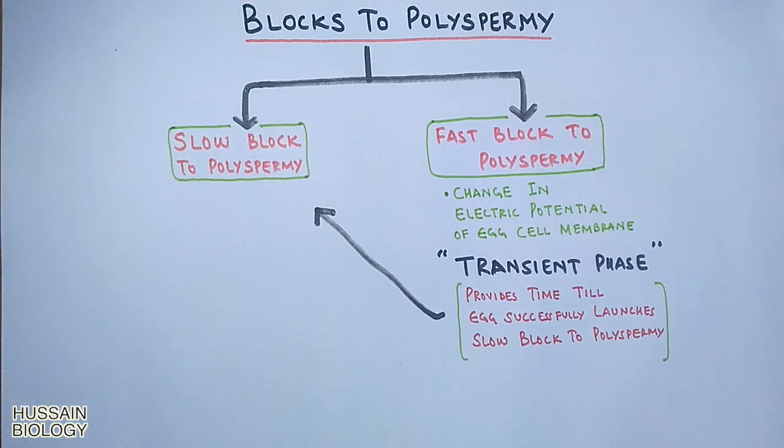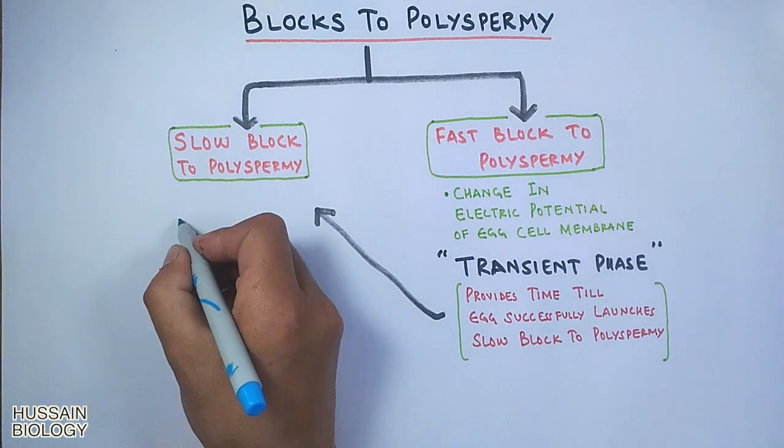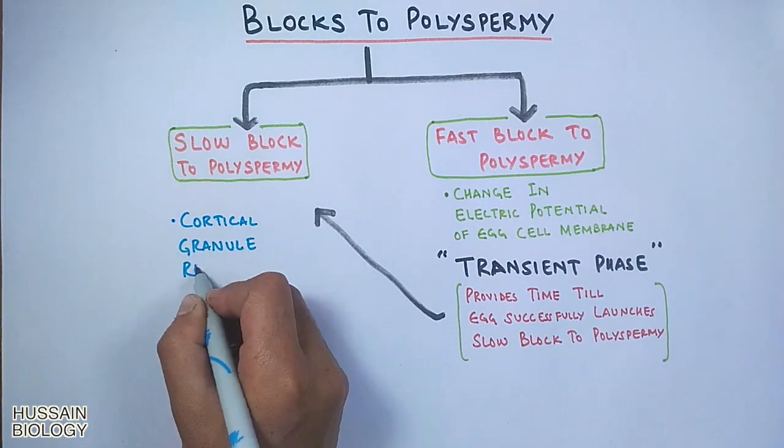So the slow block to polyspermia is the ultimate savior, and it is driven by the cortical granule reaction.